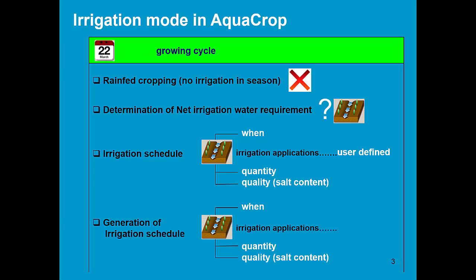The last mode is to ask help from the software to generate an irrigation schedule. So by specifying a time criteria, the software will determine when to irrigate and by specifying a depth criteria, the amount of water that will be applied will be generated.